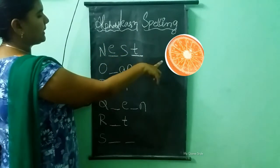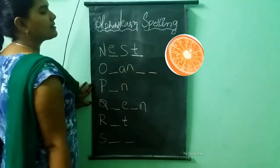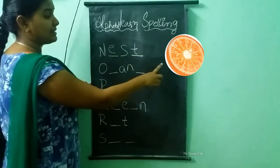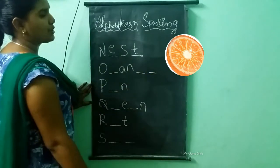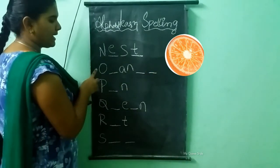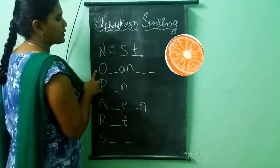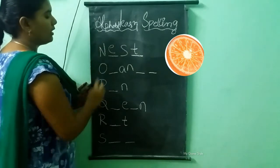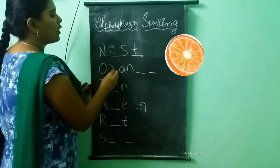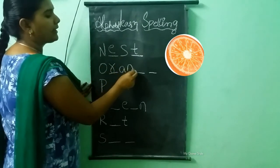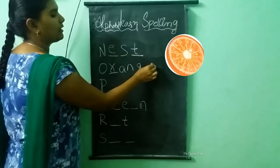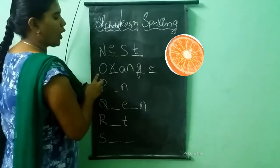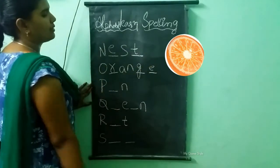What picture is this? This is an orange. What is the spelling of orange? O-R-A-N-G-E. Orange.